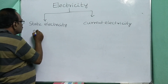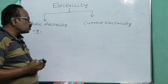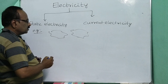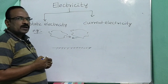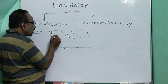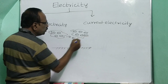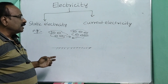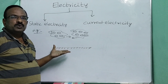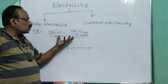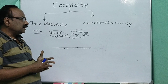Examples of static electricity: before rain, you can observe clouds moving in the sky. These clouds overlap each other, and many negative charges are present in the clouds. Due to the collision of these charges, light and sound are produced — this is called lightning. Lightning is produced due to static electricity.